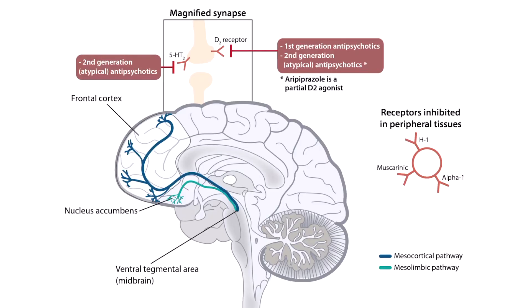This diagram illustrates the mechanism of antipsychotics. To help orient you, we can see the brain with two dopaminergic pathways highlighted. The mesocortical pathway, outlined in blue, goes from the midbrain to the frontal cortex. And the mesolimbic pathway, outlined in green, goes from the midbrain to the limbic system and the nucleus accumbens.